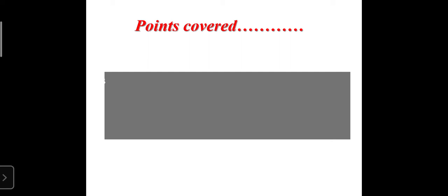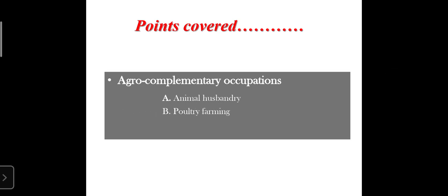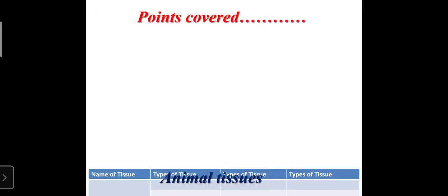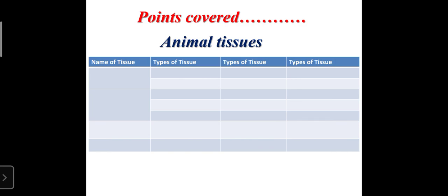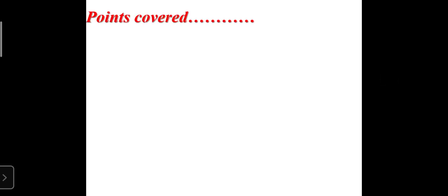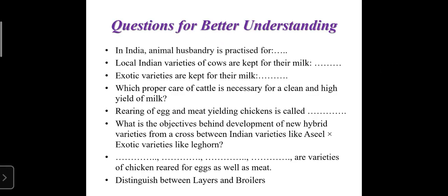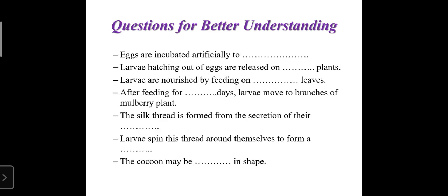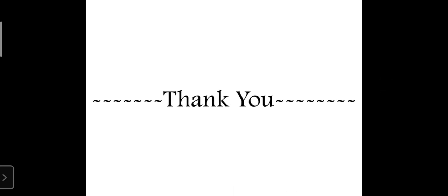So we have covered these agro complementary occupations: first was animal husbandry, then poultry farming, and third was sericulture. Now you have to complete the animal tissue chart, plant tissue chart, and the given questions, which will give you a better understanding of agro complementary occupations. Thank you.